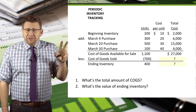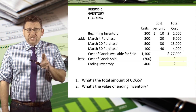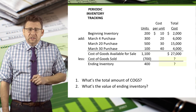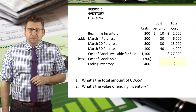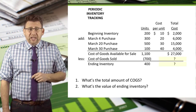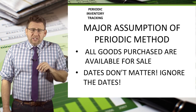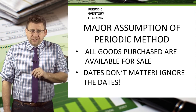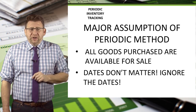We have 1,100 units available for sale with a total cost of $27,000. We know we sold 700 units, so our ending inventory must be 400 units. Now, before solving which 700 units we sold using LIFO, there's an important concept when using the periodic method: we assume that all goods are available for sale. So even though March 30 purchases couldn't realistically have been sold on March 10, we ignore that fact when using the periodic method.